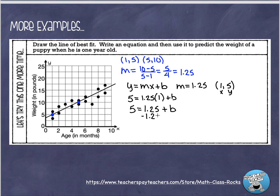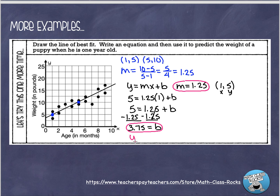Subtracting 1.25 from each side: 5 minus 1.25 gives me b equals 3.75. So I've got all the ingredients — slope is 1.25, y-intercept is 3.75. My equation is y equals 1.25x plus 3.75. That means the initial value — the starting weight — is 3.75 pounds, and then it increases by 1.25 pounds each month.